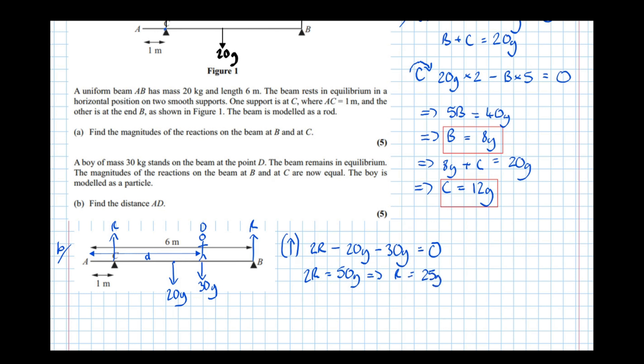So almost there. Now if we take moments about a point, let's say A since it's the distance AD that we're trying to find. So taking moments about A where I'm considering clockwise to be positive. Okay, so all the forces that will turn it clockwise are the 20G and the 30G. So the distance from the pivot to the 20G is 3.